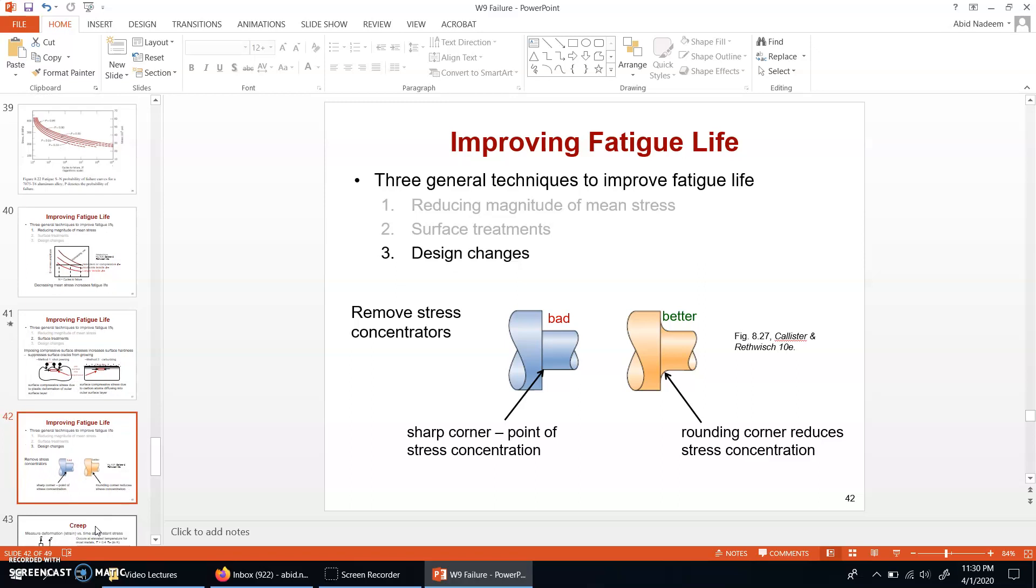The next third step is about some changes which can be introduced into the design. One of those changes is to avoid the sharp edges. For example, if this is a shaft which rotates, and then there is a change in diameter in the shaft, at this interface of these two different diameter shafts, if this change is abrupt, that point will become a stress concentration point. In order to reduce that stress concentration point, a gradual change can be introduced by rounding the corners. This will reduce the stress concentration. Once you reduce the stress concentrations, there will be less chance of the production of the cracks, and then it will help to improve the fatigue life.